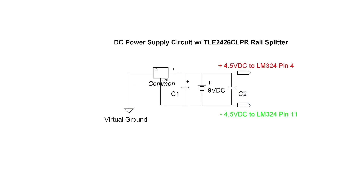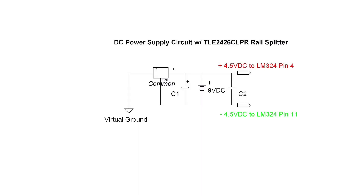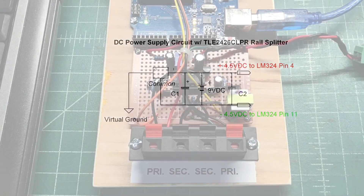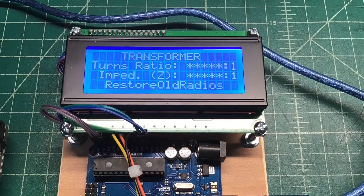Looking at the power supply: I used a rail splitter, a TLE2426, to split the 9-volt input from a battery to generate negative 4.5 volts DC to pin 11 and positive 4.5 volts to pin 4 of the op-amp. One thing to note — since the circuit uses a virtual ground, there are two isolated power supplies: one to feed the Arduino itself and a separate 9-volt supply to power the precision detector circuit.